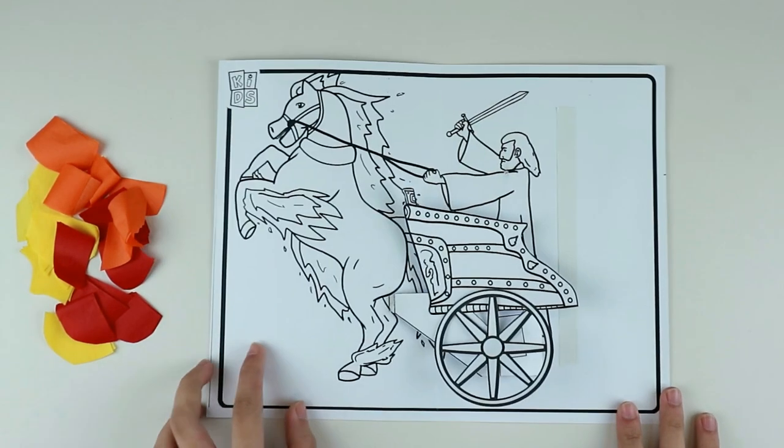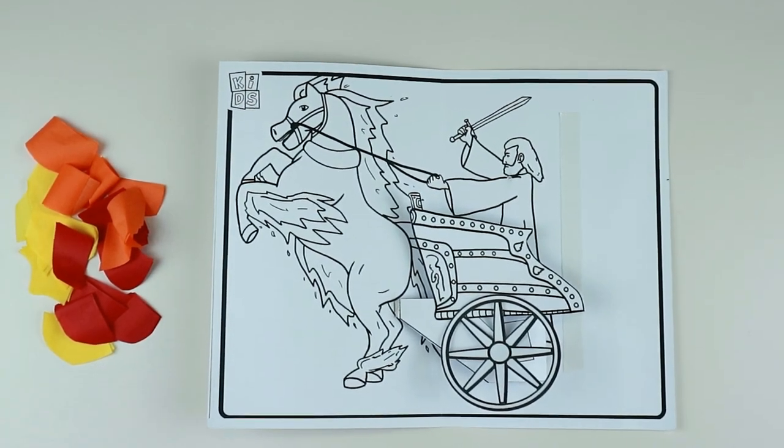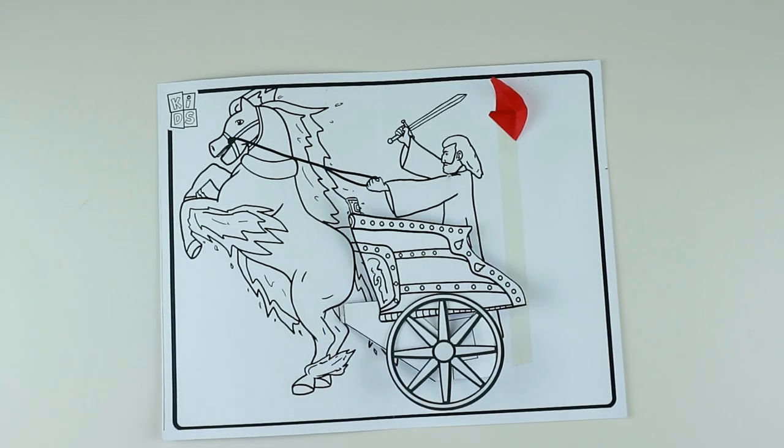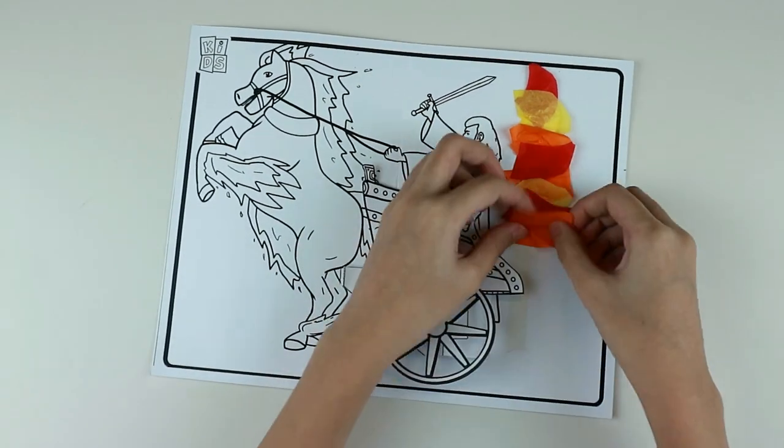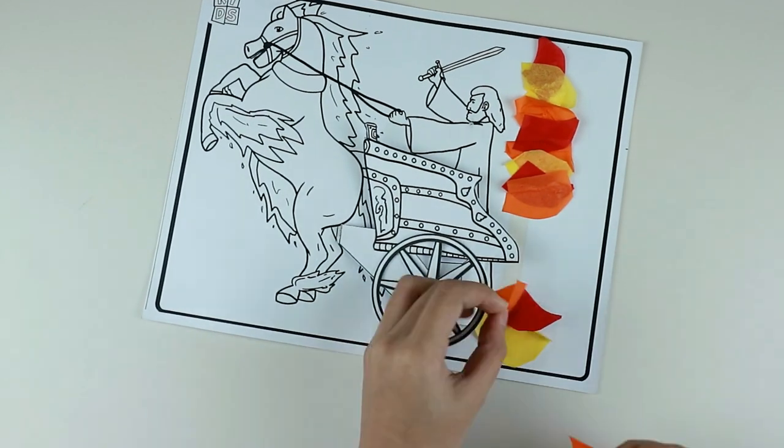Ask the kids to randomly attach the pieces of tissue paper to the strip of double-sided tape to create the fire effect. And after they do that, they can now color the coloring page in any way they want.